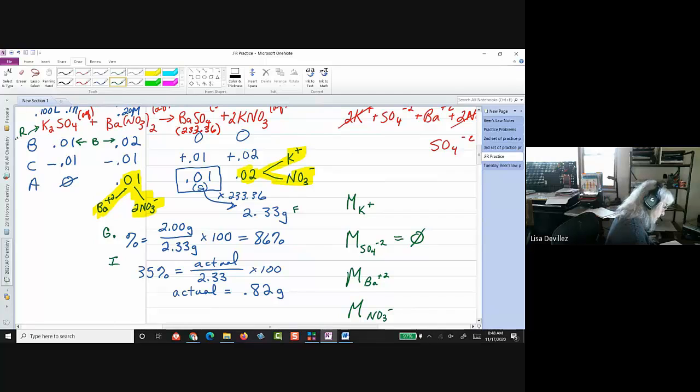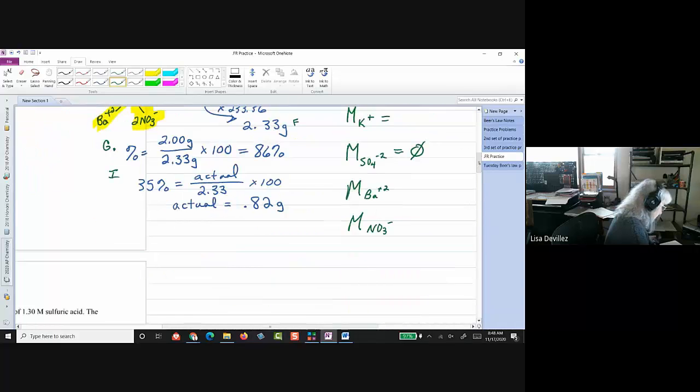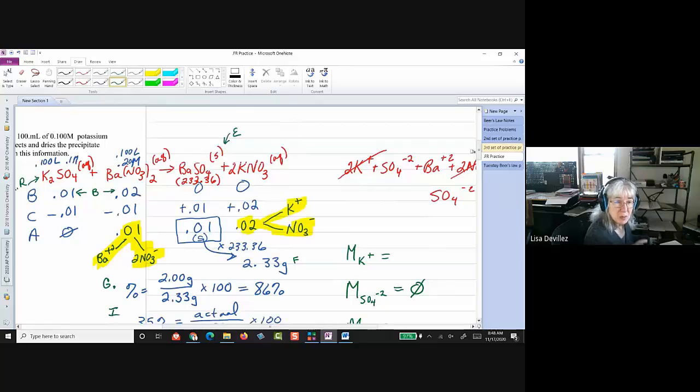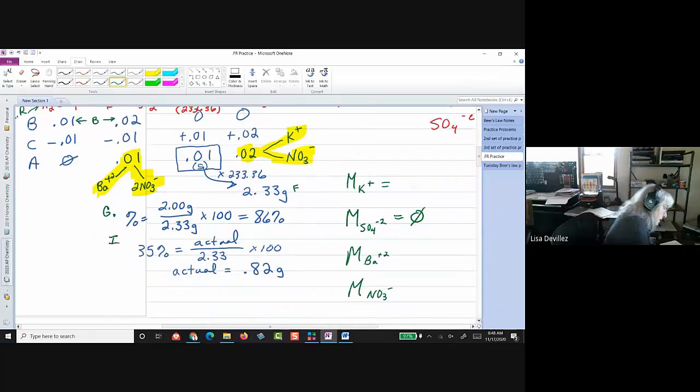And then, for all of these, all right, if I go back and look at my original thing here. Okay. So, I combined 0.1 liters with 0.1 liters. So, my volume for all of these is going to be 0.2 liters.